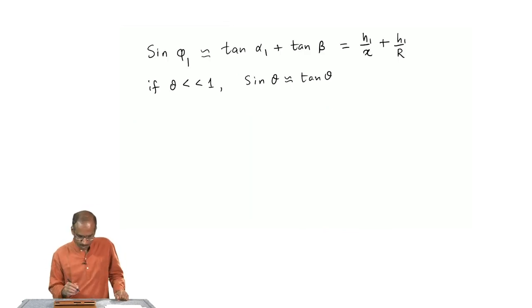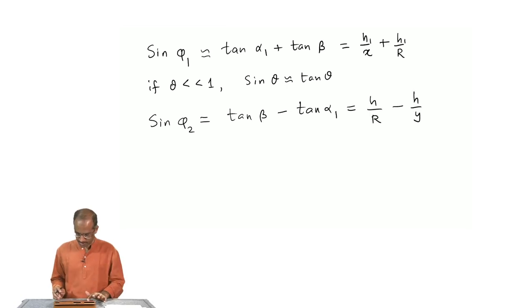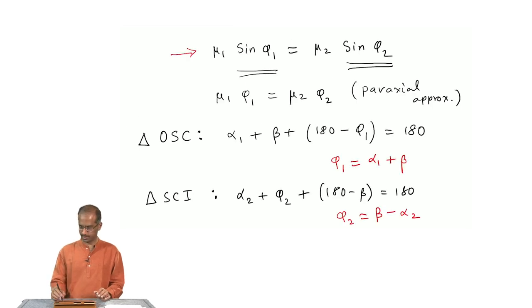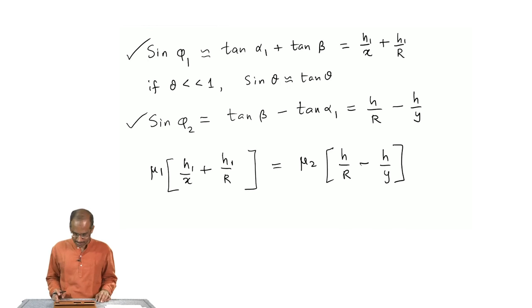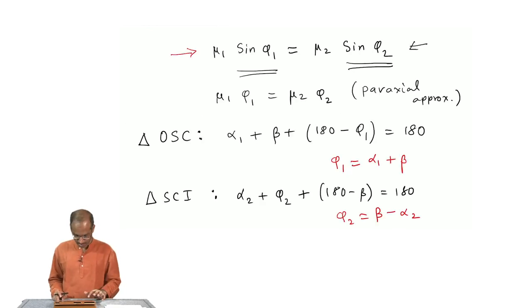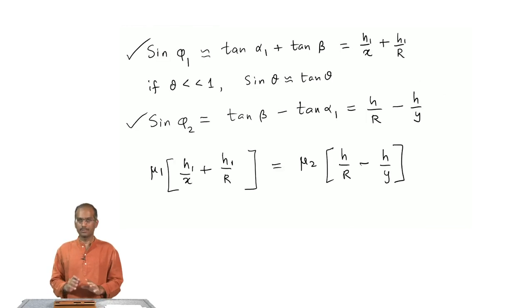By the same token I can write expressions for sin phi 2 as well, that would be tan beta minus tan alpha 2. I have expressions for sin phi 1 and sin phi 2. I simply need to substitute in this equation. This is the expression that I get when I substitute it back in this equation, which is the law of refraction. By simply rearranging this equation I can write it in a more suggestive form. So this is the final result I get.